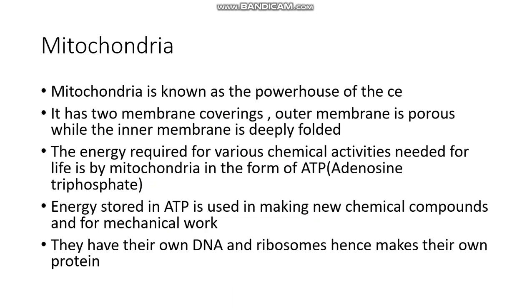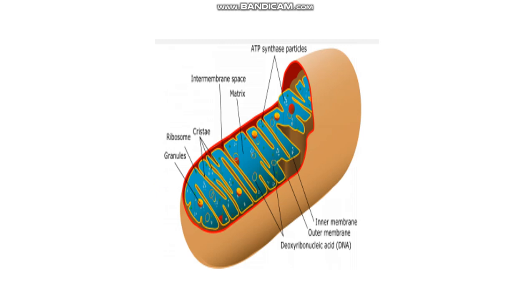Mitochondria is known as the powerhouse of the cell. It has two membrane coverings: an outer membrane and an inner membrane. The outer membrane is porous while the inner membrane is deeply folded. The blue-colored area in the diagram is called the matrix, and the yellow-colored folded line represents the inner membrane. Mitochondria has its own ribosomes and DNA, so it is capable of producing its own proteins.